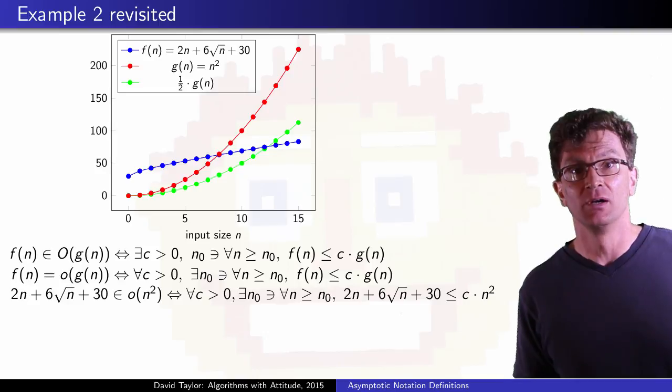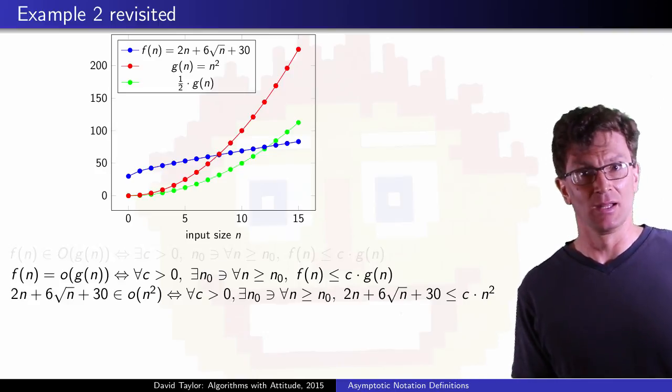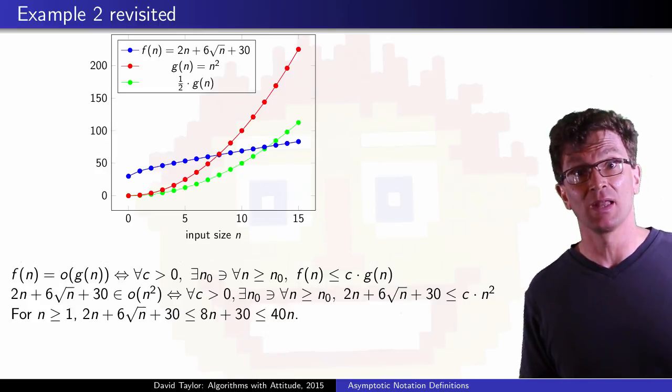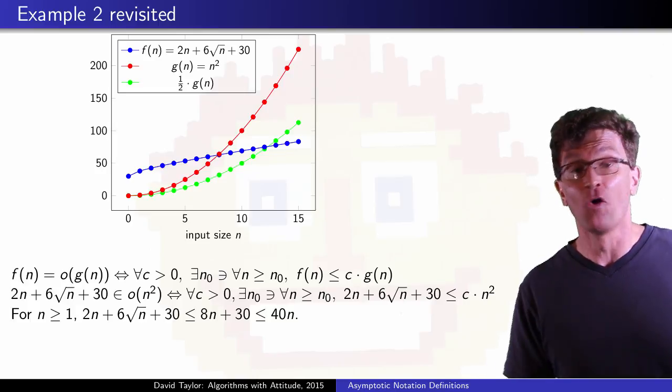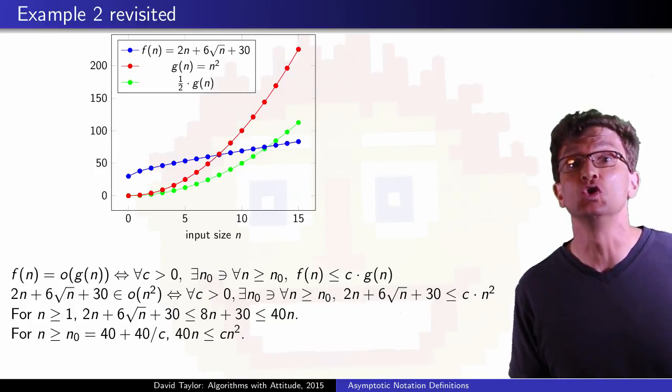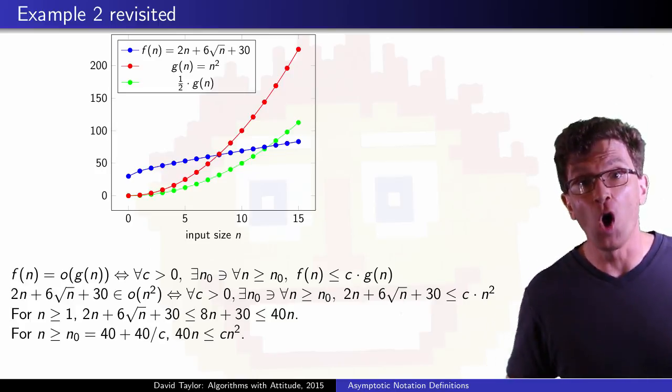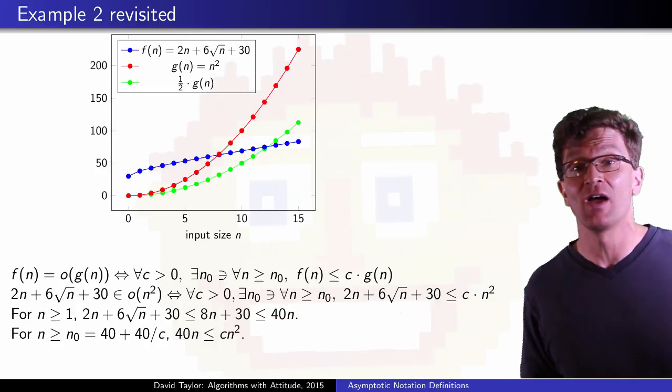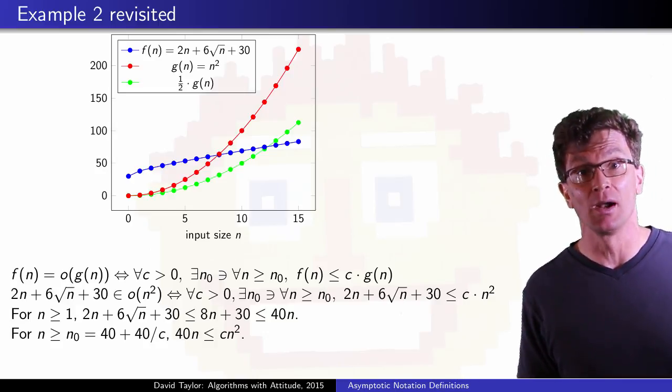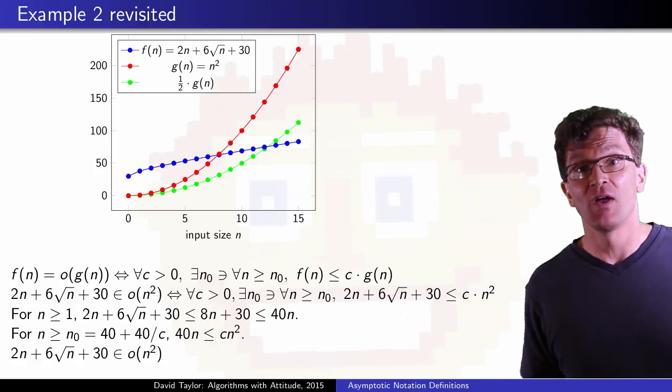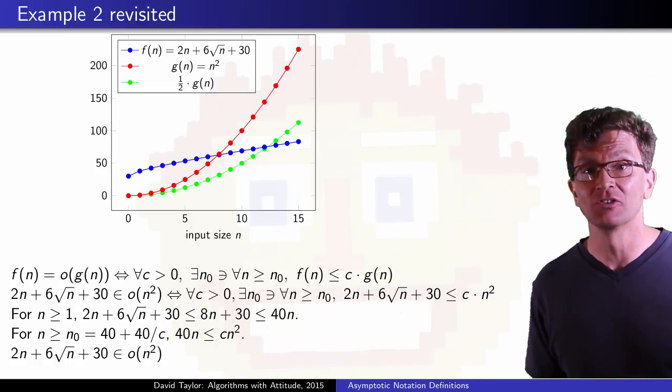Filling in my functions here, and simplifying a bit for n at least 1, I can actually calculate a value for n₀. 40 + 40/c will do. Where, for all n at least that value, I have f(n) ≤ c·n². So, f(n) is in the set little o of n².